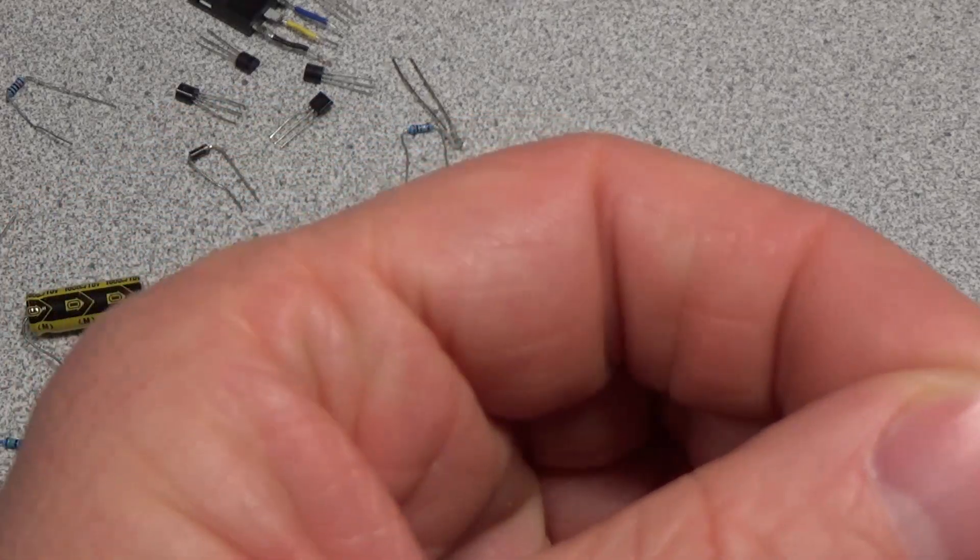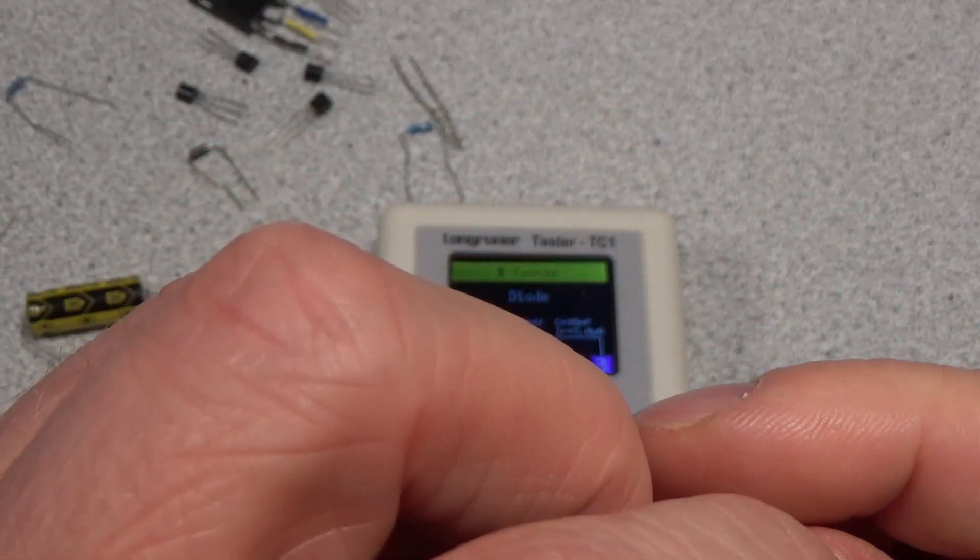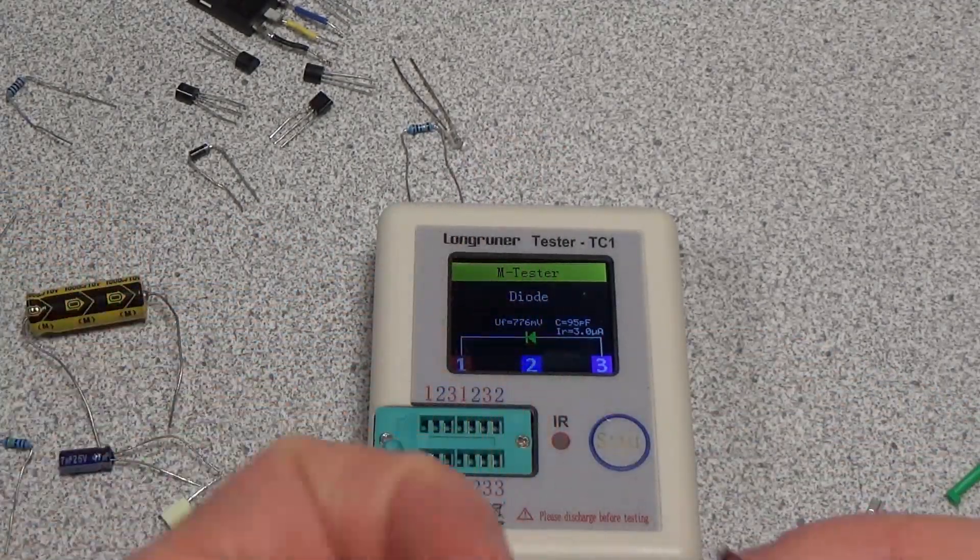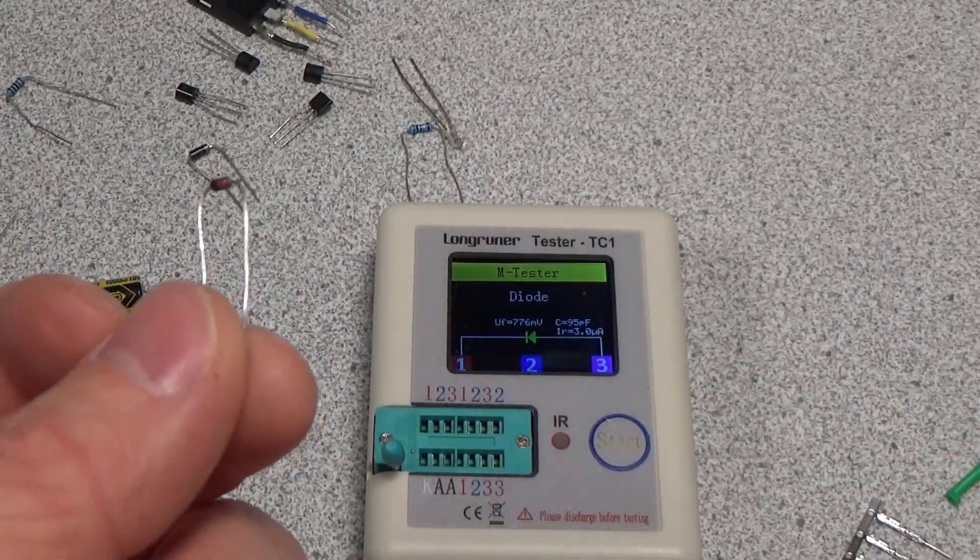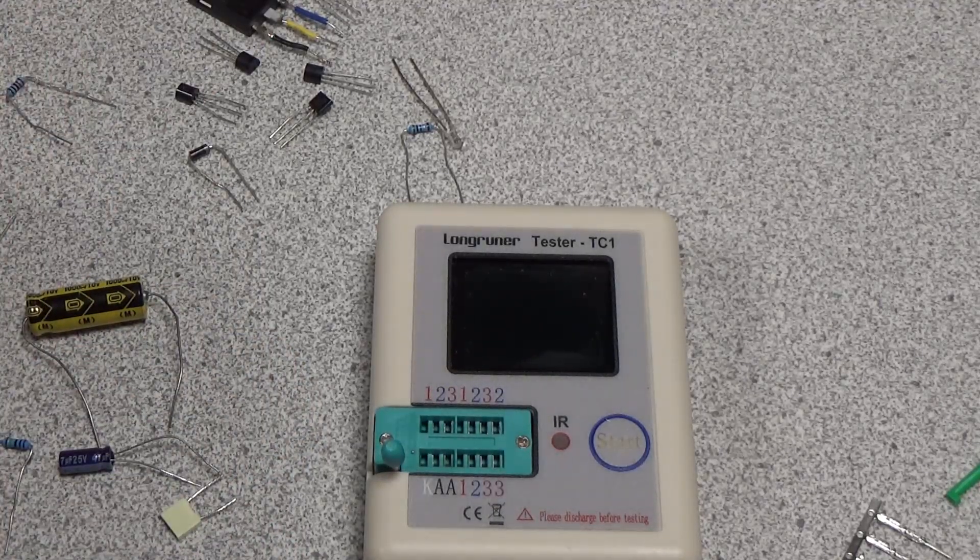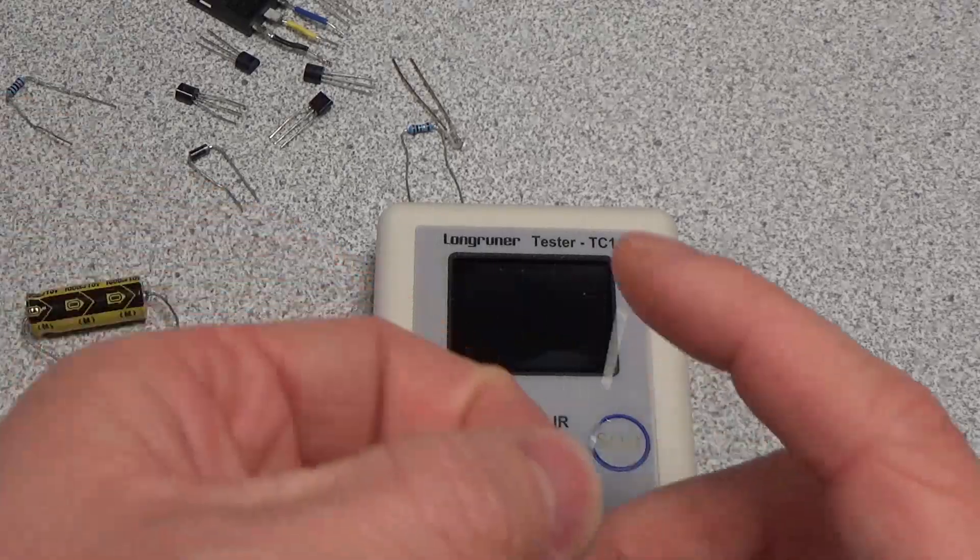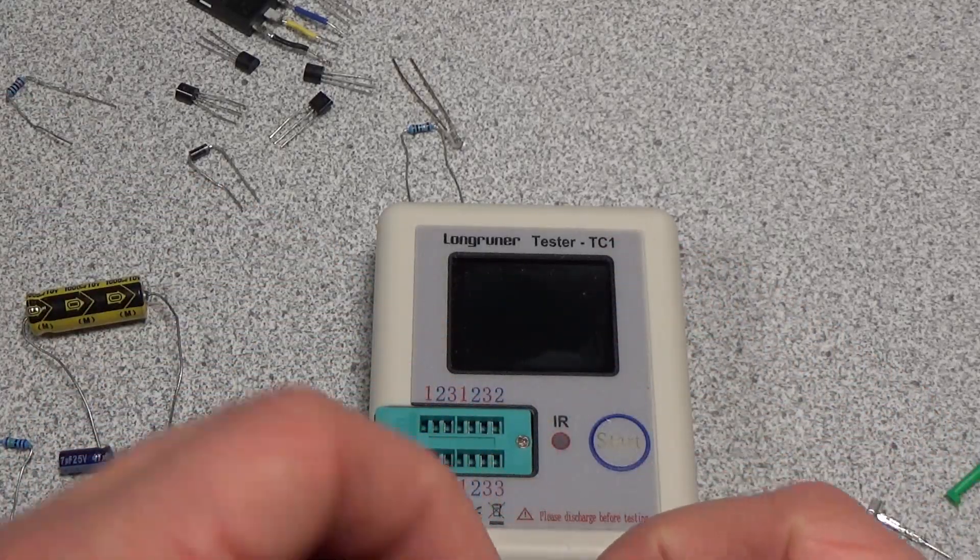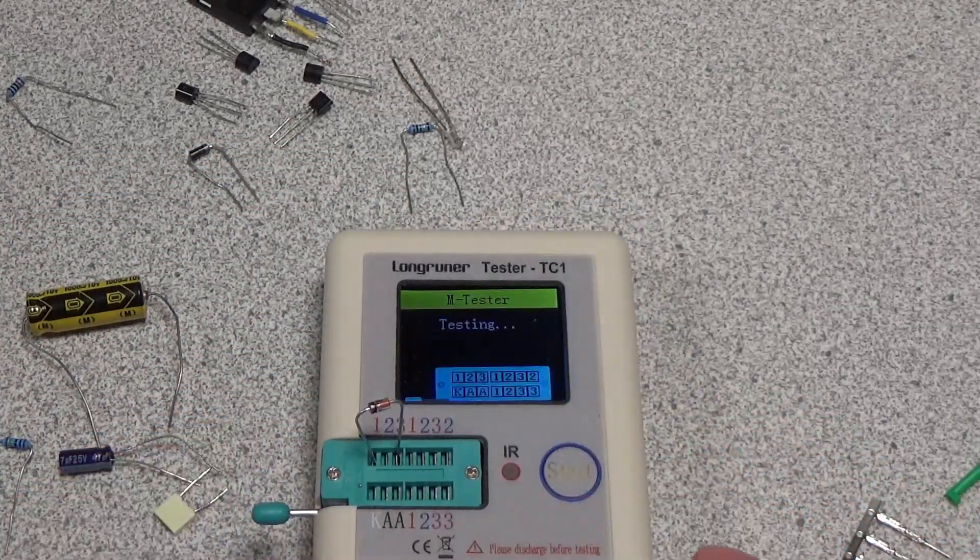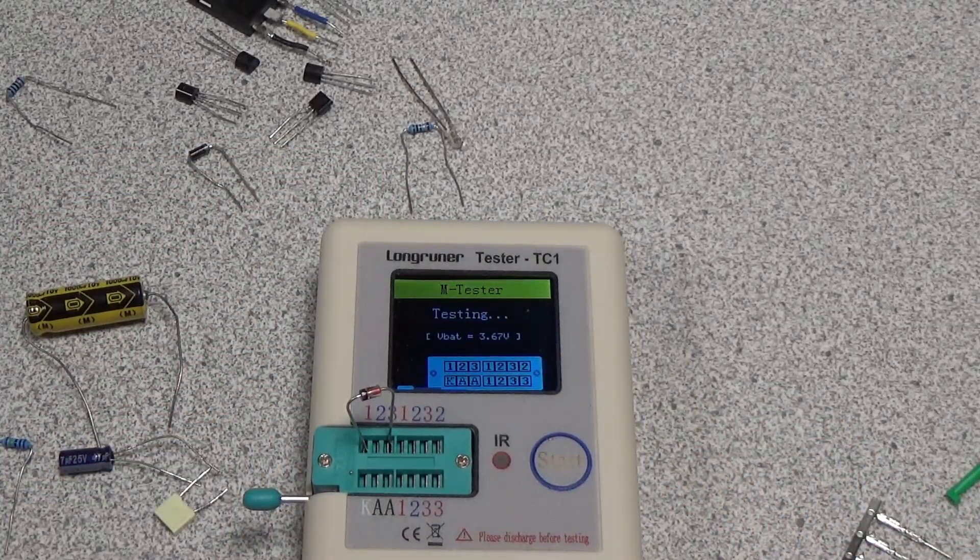I should grab the right one. This is a 5.6 volt zener diode. So this detected it as just a regular diode, so I need to find my low forward voltage diode but I don't really need to check that.